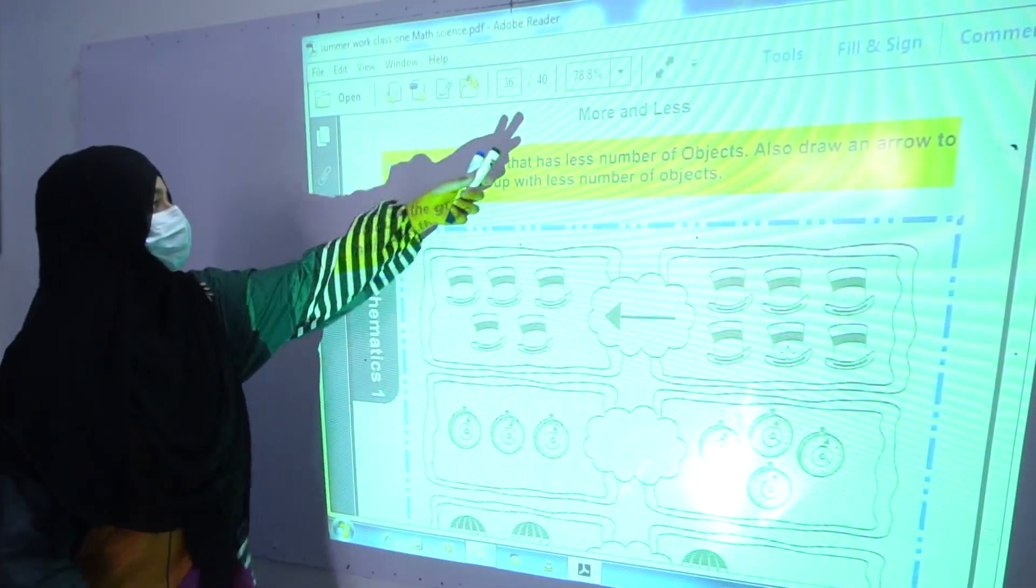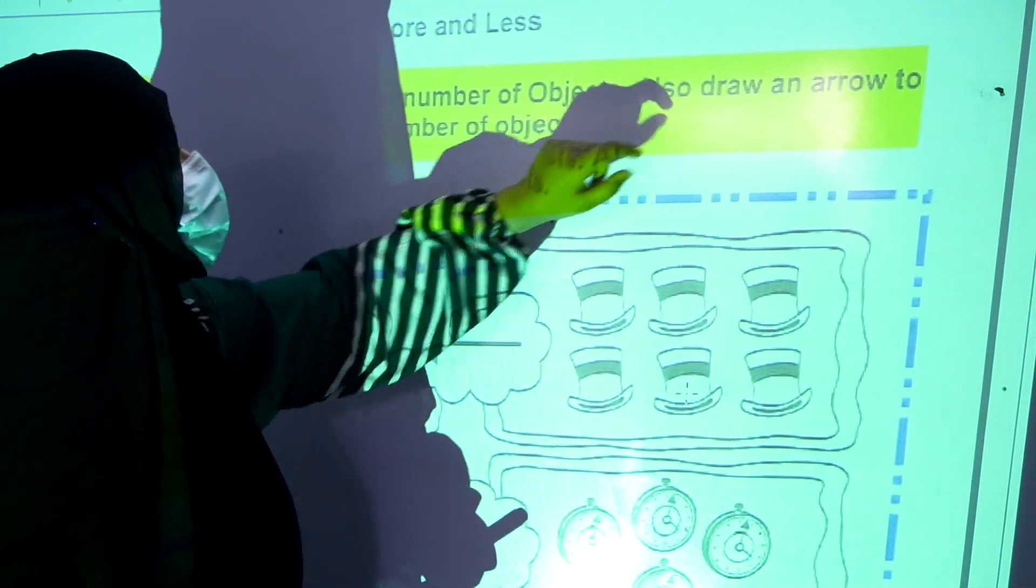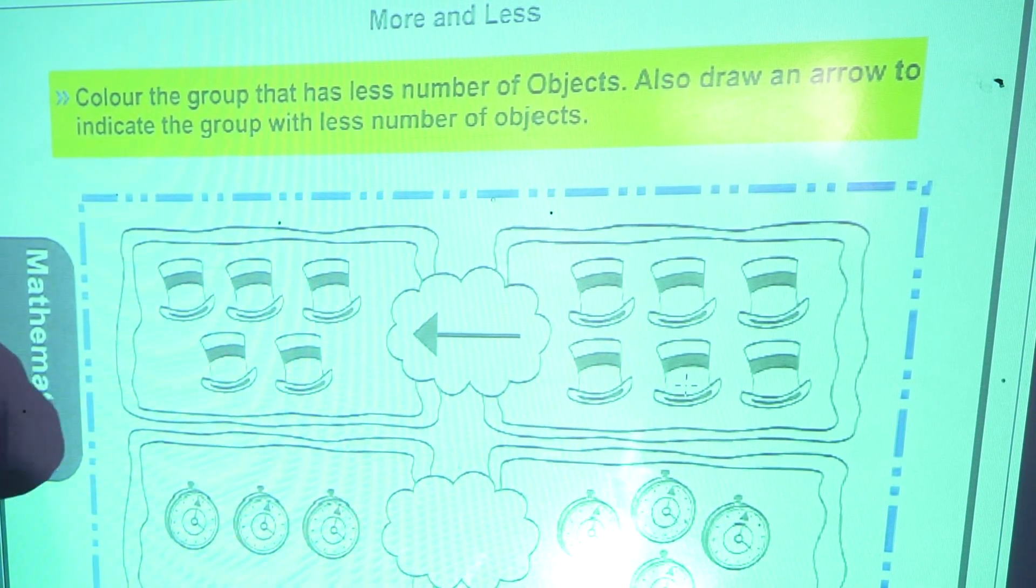Activity number 18, more and less. Color the group that has less number of objects. Also draw an arrow to indicate the group with less number of objects. For example,